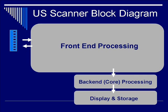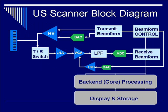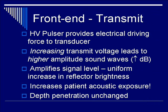Now let's peel off the block bit by bit. With an eight-element transducer example, peeling off the front-end processing block reveals the upper line as transmission and the second line as the receiving aspect. In front-end transmission, a high-voltage pulsar provides the electrical driving force to drive the transducer to produce the ultrasound pulse. Increasing the transmission voltage leads to high-amplitude sound waves and increased decibels. Amplifying the signal level yields a uniform increase in reflected brightness. However, increasing transmission power also increases patient exposure to sound waves, and depth penetration is unchanged.